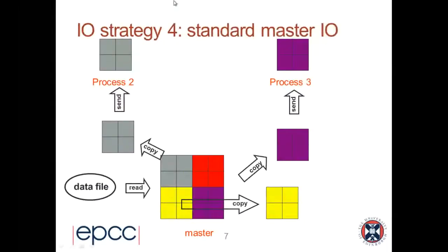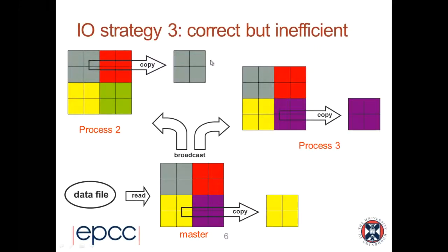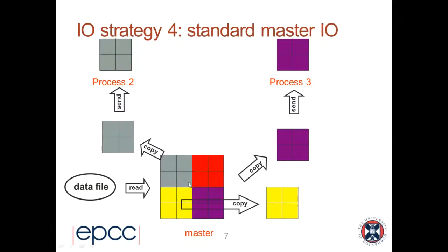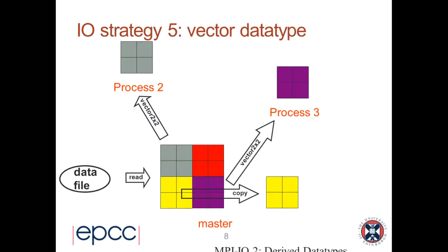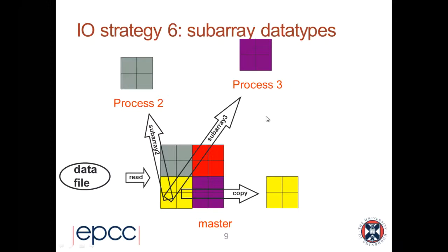The third strategy, which was correct but inefficient, was to carry out the broadcast strategy but to copy down the correct data. The idea here is just to get you looking at the way the program is set up to make sure you understand how the indexing goes, because the processes compute their coordinates and you're going to have to know where somebody is in the grid. The next one was standard master IO where you broadcast the data, people copy down their local section and send it out. The two improvements were to use data types to avoid the explicit copy - using a vector data type placed as a template on the array - and the final strategy was to use subarrays, where you need a different subarray for each worker since they get different pieces of the data.